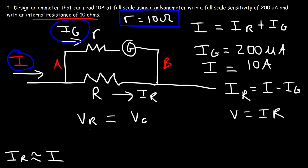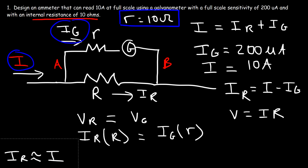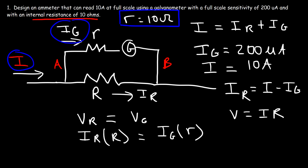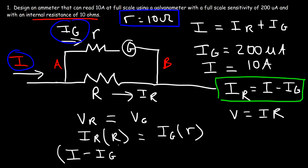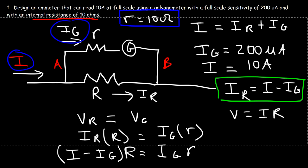Using V = IR, the voltage across the shunt resistor is IR × R, and the voltage across the galvanometer is IG × r. We replace IR with I minus IG, giving us the main formula: (I − IG) × R = IG × r. Now that we have the formula, we can calculate the shunt resistance.